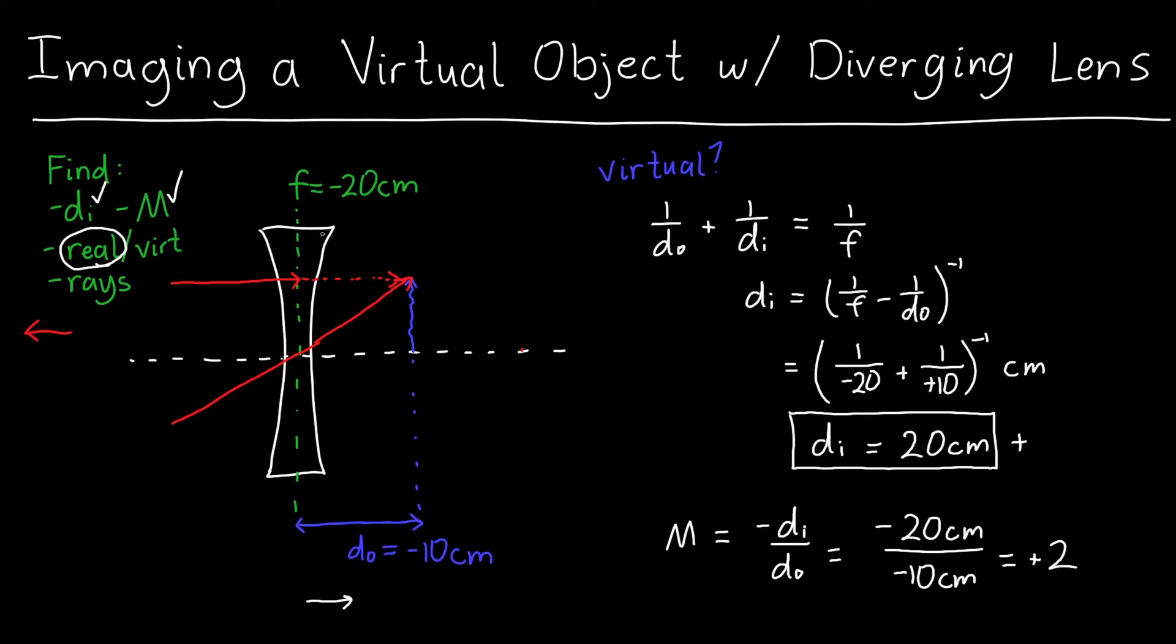But I do have this diverging lens here, so I need to figure out what actually happens to this ray here. Well once it hits a diverging lens, it's going to be bent away from the optical axis. And because the focal length is negative 20 centimeters, and this distance is 10, it's going to have a more shallow angle, so I'll draw it like so.